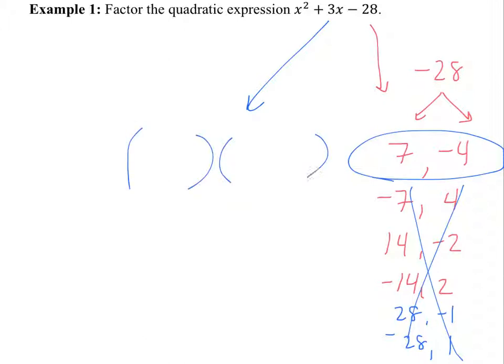What do my factors look like if we circled 7 and negative 4? x plus 7 times x minus 4. We literally take the factors — this is a 7 here, that goes right there; this is a negative 4, that goes right there. And how do you know you're correct? Multiply it back. So once you divide it through, you can re-multiply to check.